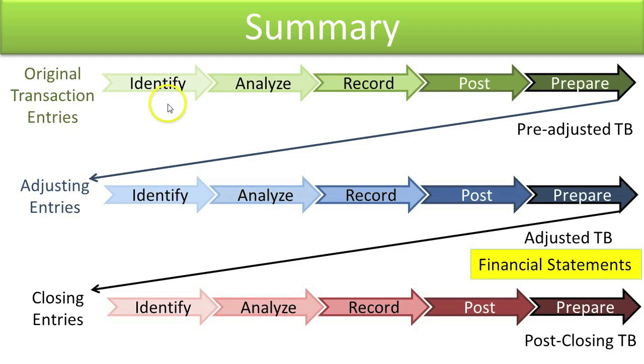First, identify relevant economic information. Second, analyze the impact on the accounts. Third, record journal entries. Fourth, post the entries to the general ledger accounts. Fifth, prepare the correct trial balance.